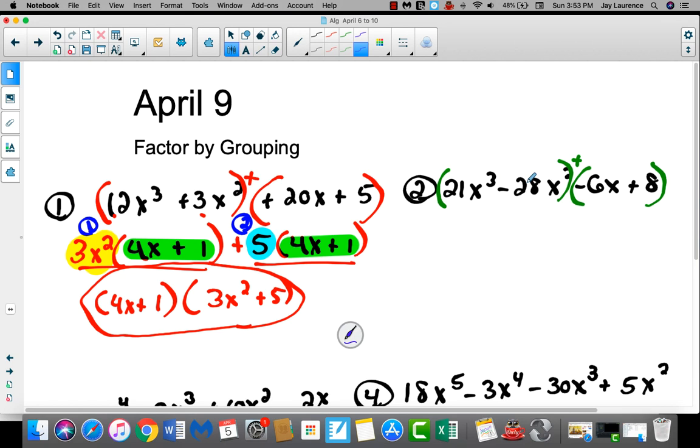Okay, so my GCF looks like it's going to be a 7x squared, and I'm going to have a 3x minus 4 if I factor out a 7x squared. Here, do you notice my signs go positive, negative, but here they go negative, positive. I'm not going to factor out a positive number. I'm going to factor out a negative 2, leaving me a 3x minus 4.